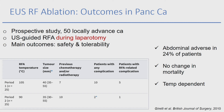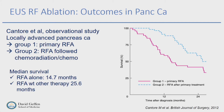Moving on to pancreas cancer, which was also studied — a few studies are available on RFA for pancreatic cancer. One study looked at 50 locally advanced cancers using ultrasound-guided RFA during laparotomy. 24% of patients developed complications including pancreatic fistulas in two patients and portal vein thrombosis in four patients. Complications were temperature-dependent, and when temperature was decreased from 105 to 90 degrees, there was significant improvement in the rate of adverse events.